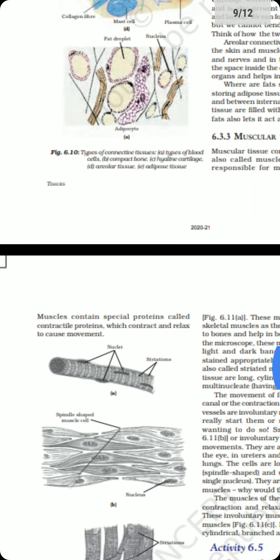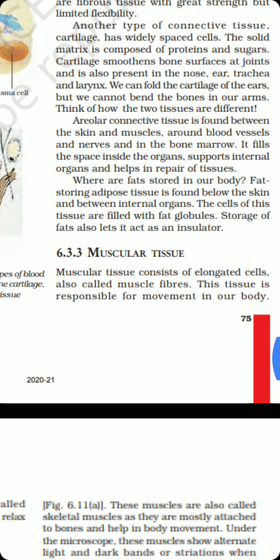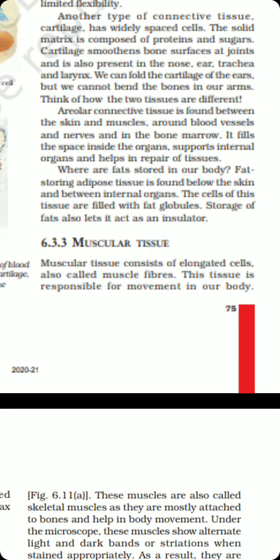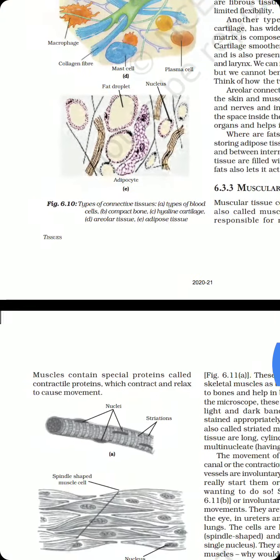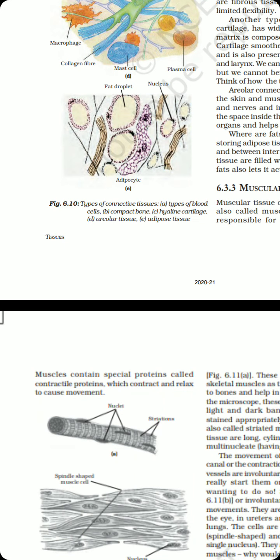Now let us move to yet another kind of tissue — the muscular tissues. Our body contains different kinds of muscles depending on their location and function. Muscular tissue consists of elongated cells also called muscle fibers. This tissue is responsible for movement in our body, and muscle tissues are provided with special proteins — actin and myosin — that help them in contraction and relaxation.